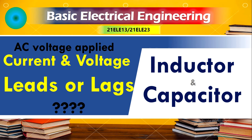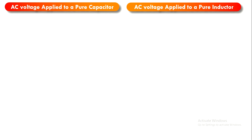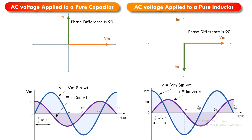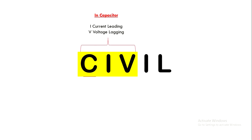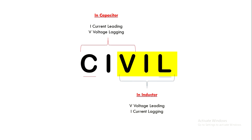Hello everyone, welcome to Explorer Electronics. In the previous video you have seen AC voltage applied to the inductor and capacitor separately, and how to take the current and voltage leading and lagging cases. In this video I have explained the two different analyses when AC voltage is applied to a capacitor and pure inductor. The code word to remember: current is leading in a capacitor, and in an inductor voltage is leading — so current is lagging behind.